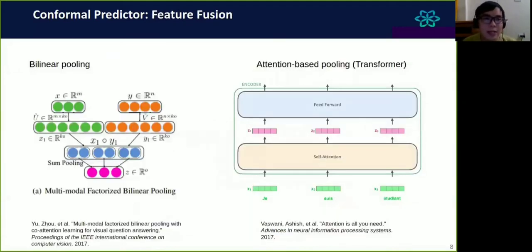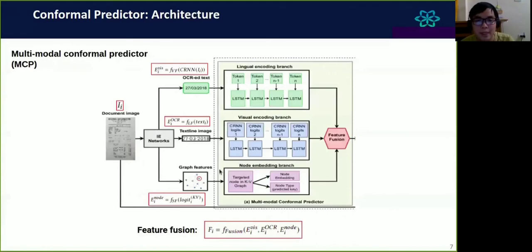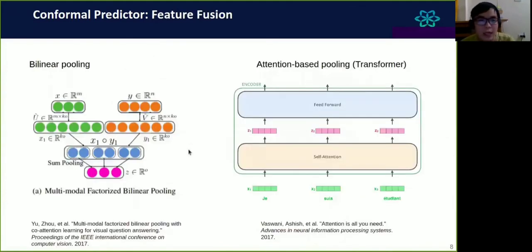The first advanced technique is bilinear pooling. Bilinear pooling takes the idea from visual question answering, where they need to combine signals from different sources of data, for example, from text or from image data. The data comes from different modalities. In our case, we also have signals that come from image, from text, and from graph neural network. We apply the bilinear pooling technique. With multimodal bilinear pooling, we take the outer product of the input vectors. This product will be the input to a sum pooling operator. The output will be the final output for the feature fusion.